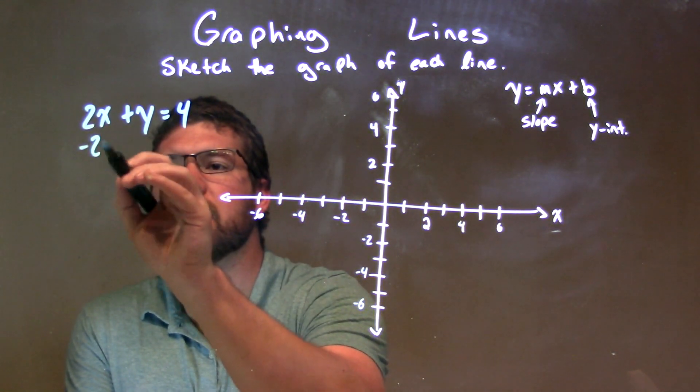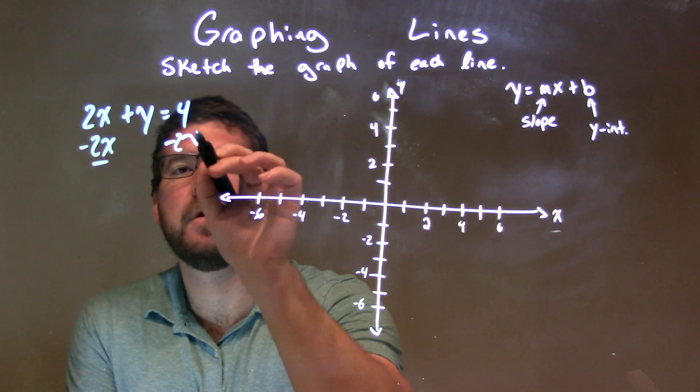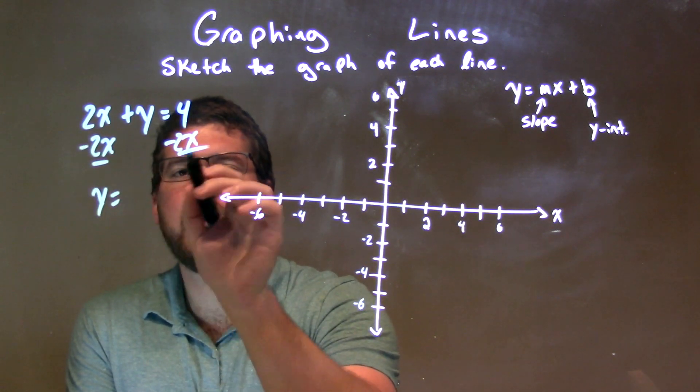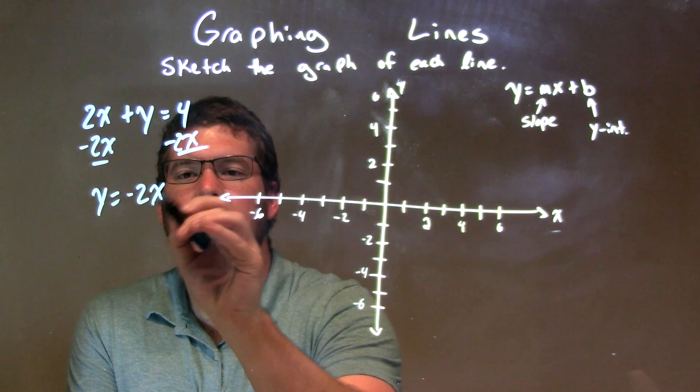So to do that, I subtract 2x from both sides. This leaves me y by itself, right? And then negative 2x first, so negative 2x plus 4.